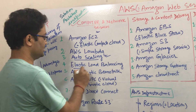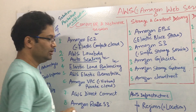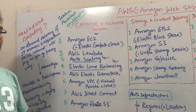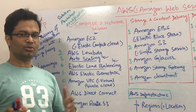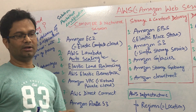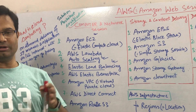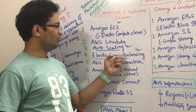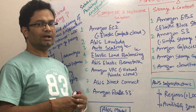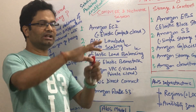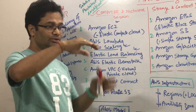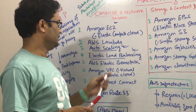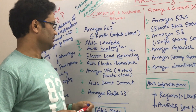Load balancing is also an important thing. As I discussed, if traffic is going high and you need many machines — one machine is not sufficient — you can set up load balancing. Automatically, it will distribute your traffic across different machines with the help of load balancing.